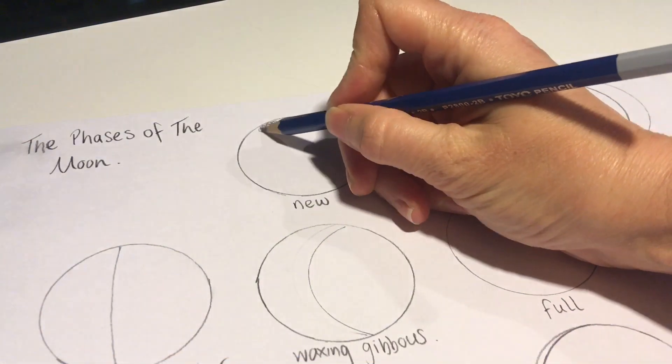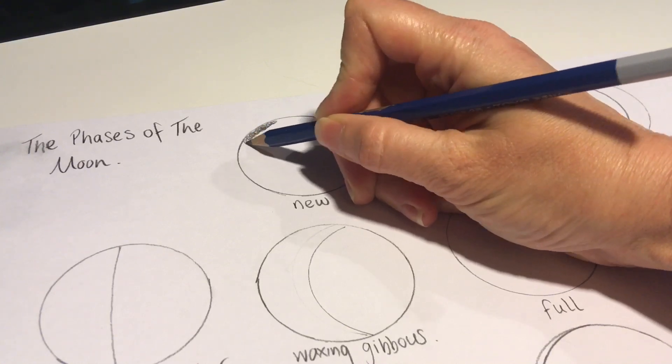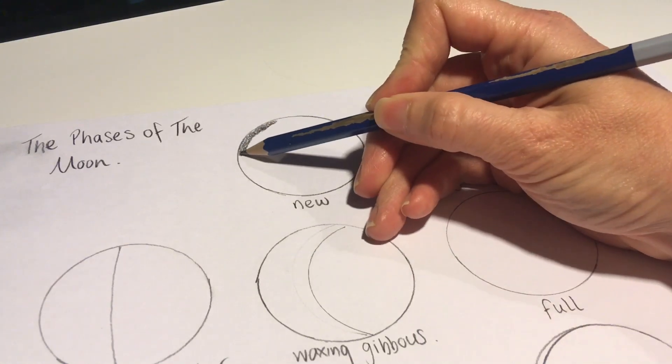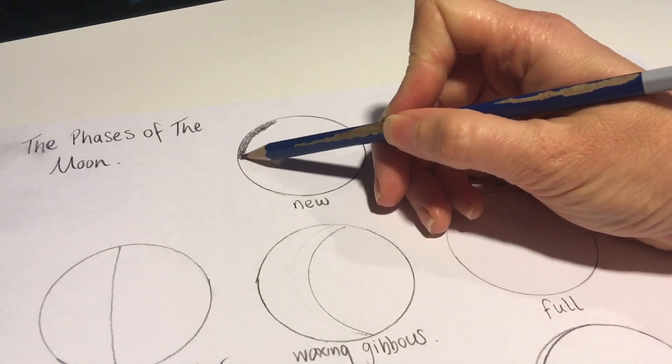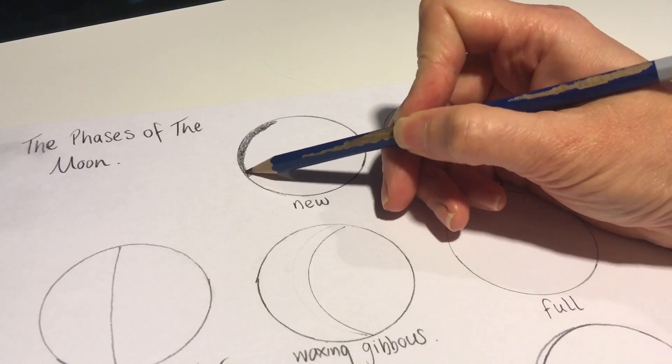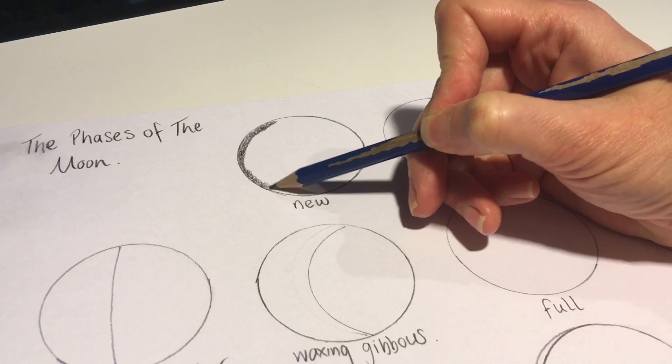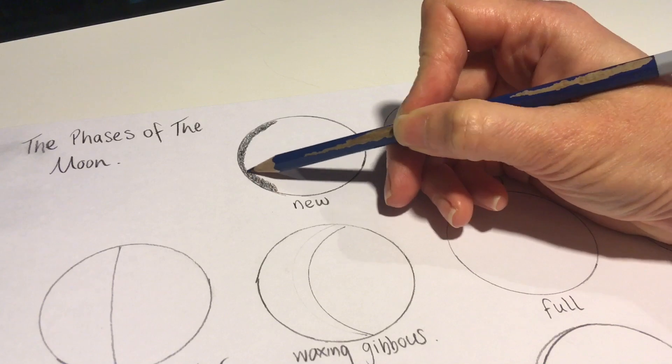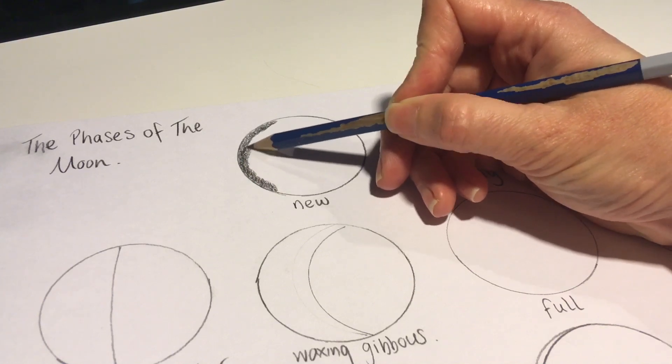Our first phase of the moon is the new moon, and for this one you're going to completely shade the whole moon. I'm using my pencil, holding it at an angle, so I'm not holding it upright. I'm not gripping it too tightly in my hand so that I'm not pressing on too hard, and I'm building up small circles as I go. Each circle that I do is overlapping the one that I do before it, so we're going over and over each layer.